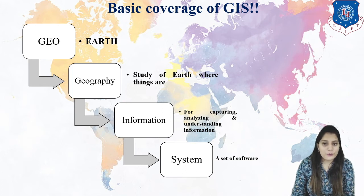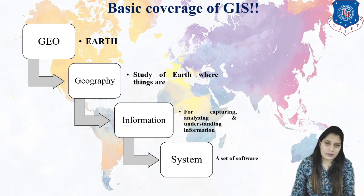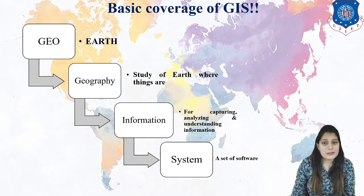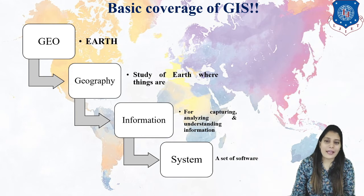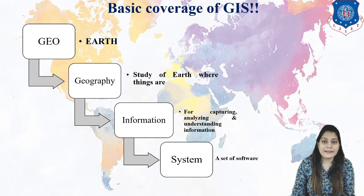Now, the word 'geo' is related to earth — that is known as earth. Then you have the word 'geography' — the shape of earth, study of earth; things which are related to earth are known as geography. Then you have 'information' — the set of capturing, analyzing, and storing data; that is the information we are gathering using this tool and technique. And lastly, we have the 'system' — that is a set of various softwares.